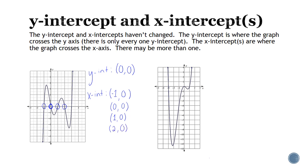For the second graph, the y-intercept is again at (0, 0). Then the x-intercepts are at negative three, zero, and positive one.